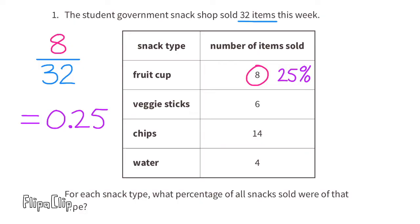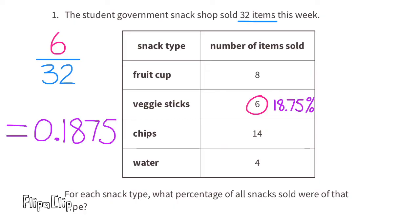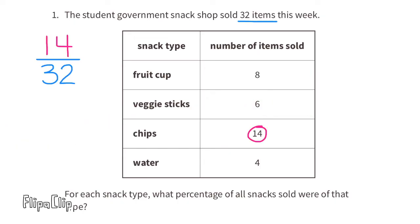Six of the 32 items were veggie sticks. Six divided by 32 equals 0.1875, which is 18.75 percent. So 18.75 percent of the 32 items sold were veggie sticks.